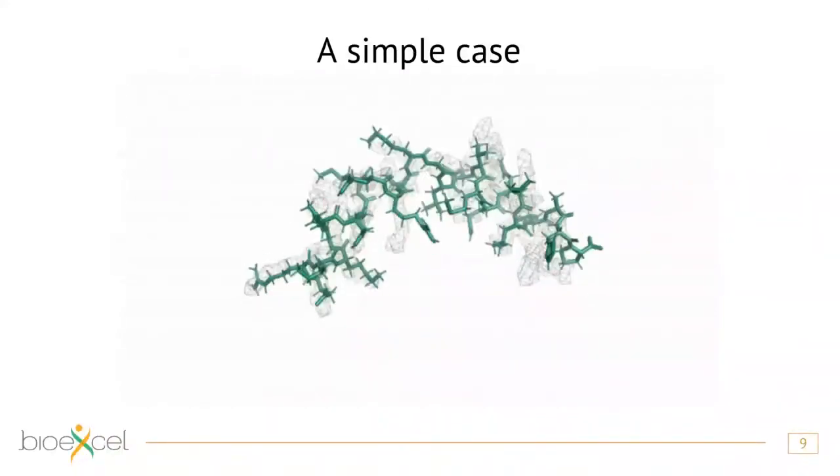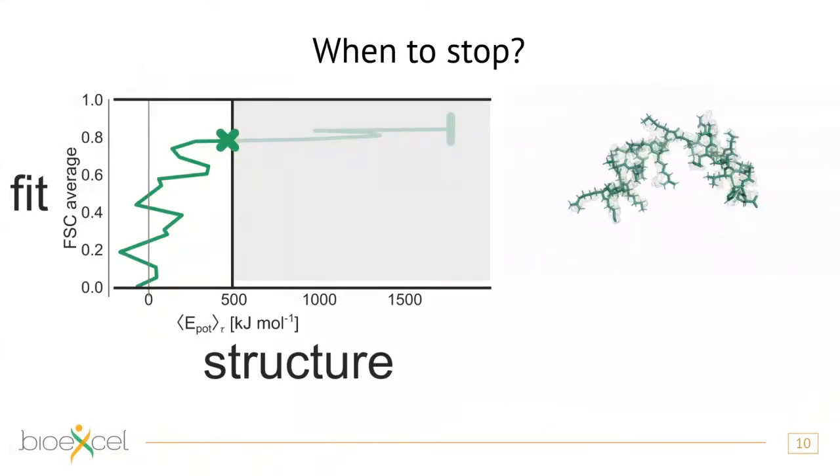For this, we can quantify things a bit more. We can have a look at the average potential energy that reflects what the structure is - a running average of the potential energy. On the other hand, we can have a look at some measure of how well we fit. In this case, using some FSC average, you could choose different measures. What we want to do here is stop just right when the moving average of the potential energy is about to explode. That means we're cramming in the structure and seeing something that is most likely not biologically relevant.